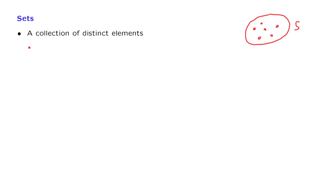More formally, how do we specify a set? We could specify a set by listing its elements and putting them inside braces. So this is a set that consists of all the letters A, B, C, D.